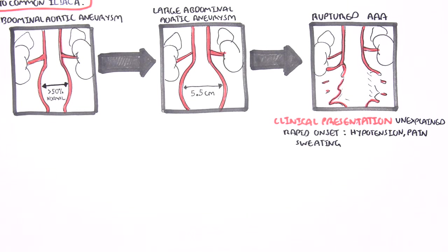The AAA can rupture either anteriorly or posteriorly. Anteriorly, it can rupture into the peritoneal cavity, or posteriorly into the retroperitoneal.